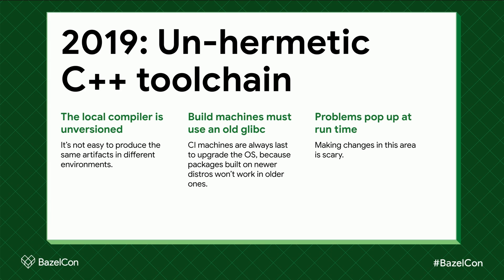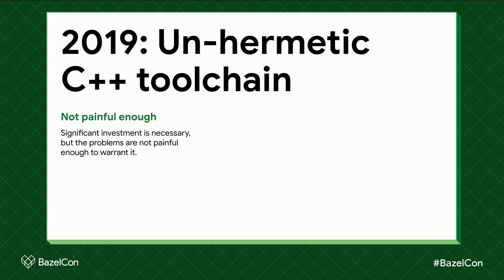The second issue we faced is that build machines must use an old glibc. If you're using the toolchain on the host, it will automatically link to the glibc on the host. glibc is backwards compatible but not necessarily forwards compatible — meaning if you build an artifact on a newer distribution it might not work on an older one. CI machines are always the last to upgrade the operating system, and these glibc incompatibilities pop up at runtime, making changes in this area kind of scary. There are of course many more issues related to caching and things like that, but these are the most relevant to our team.